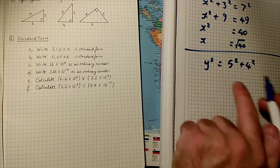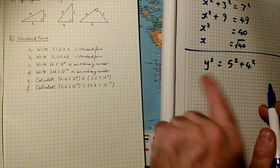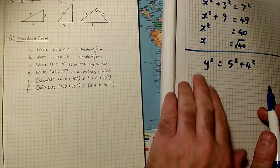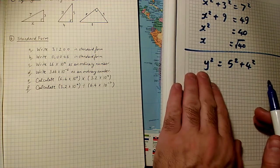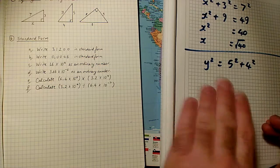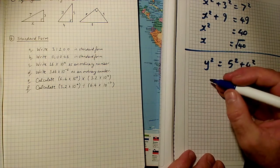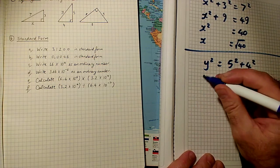So y squared equals 5 squared plus 4 squared. This time I've written the 2 on the right and the odd one on the left, just to keep the unknown thing on the left. To keep the y on the left, so I get y equals answer at the end.